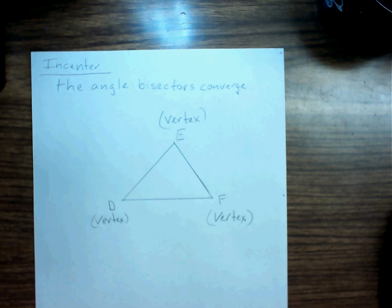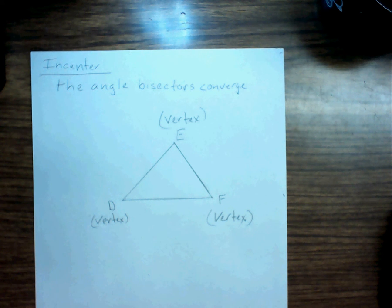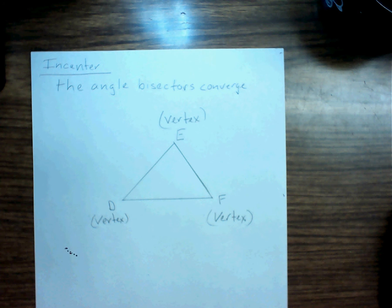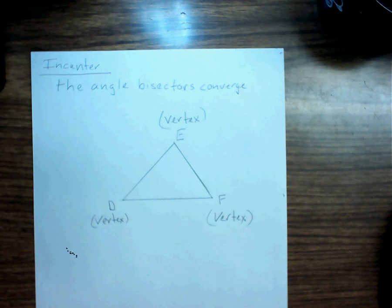When we construct the incenter, this center is a little different. We can draw the circle inside the triangle, but we're going to use angle bisectors instead of perpendicular bisectors. The perpendicular bisector is a line that intersects the side of the triangle at the midpoint and forms a 90-degree angle with that side. Here, we're just going to bisect the three angles.